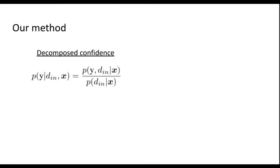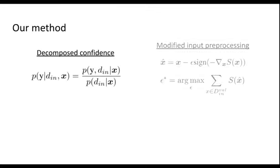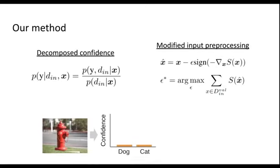Our paper proposed two methods for the problem. The first one is decomposed confidence, and the second one is modified input processing. Both approaches encourage the model to give low confidence predictions for the out-of-distribution images, so that we can reject the out-of-distribution data easier with a threshold.